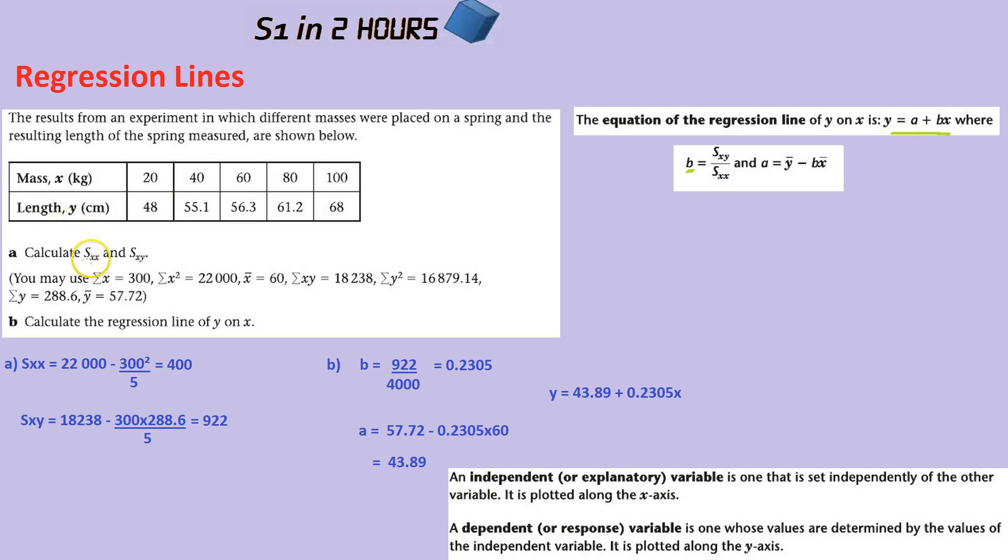Calculate sxx and sxy. Well again, that was done in a previous video, but you would simply use the data they've given to you. So for example here, the sum of x squared, this is for sxx, is 22,000. Again, look how much data they've given you, saving you so much time. Take away the sum of x squared divided by n. How do we know the n? Well there's five bits of data in each row, so we know n is five. That gives you 400.